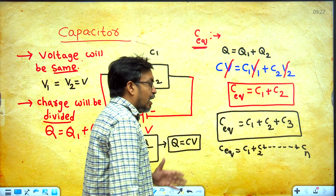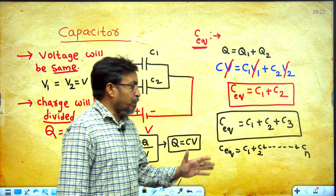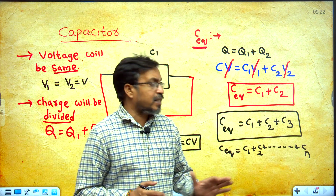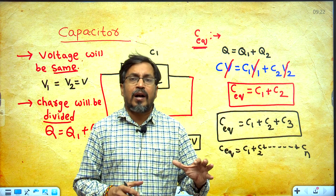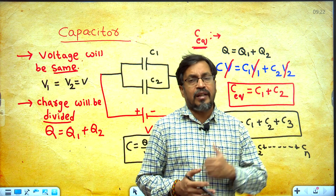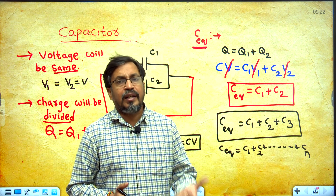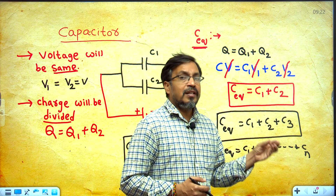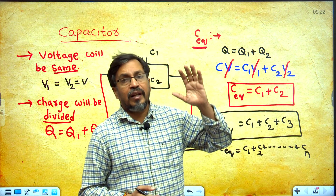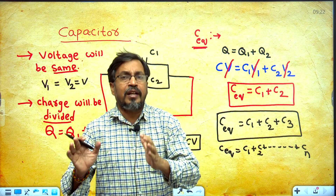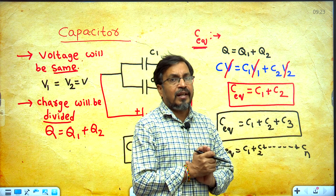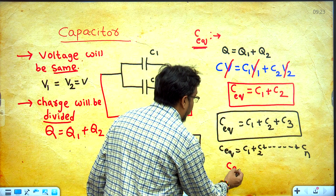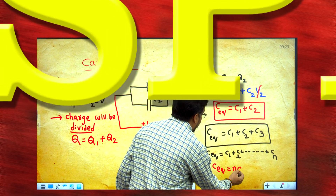When N capacitors are in parallel, C equivalent equal to C1 plus C2 plus ... plus Cn. If N capacitors have equal capacitance C — meaning C1 equal to C2 equal to C3 equal to Cn equal to C — then C equivalent equal to NC.